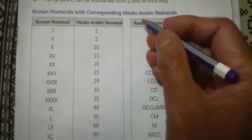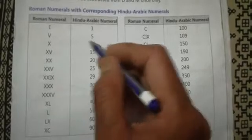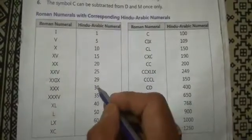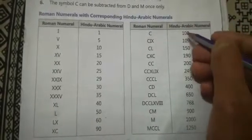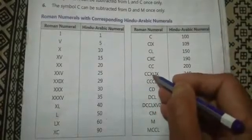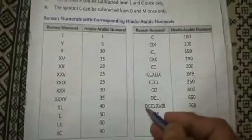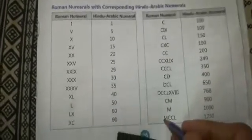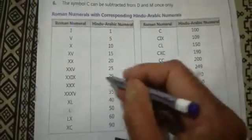Roman numerals with corresponding Hindu-Arabic numerals: I=1, V=5, X=10, XV=15, XX=20, XXV=25, XXIX=29, XXX=30, XXXV=35, XL=40, L=50, LX=60, XC=90, C=100, CIX=109, CL=150, CXC=190, CC=200, CCXLIX=249, CCCL=350, CD=400, DCL=650, DCCLXVIII=768, CM=900, M=1000, MCCL=1250. All rules are applied in writing these numerals.